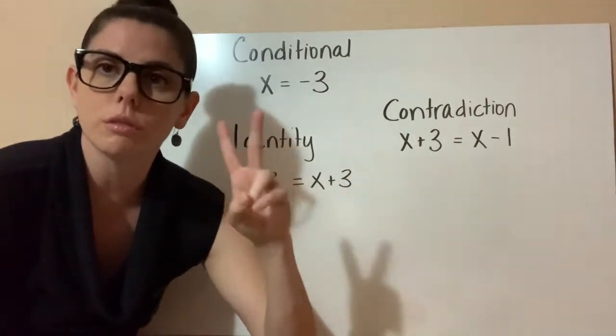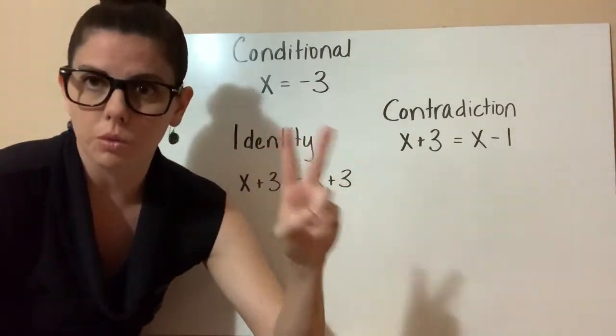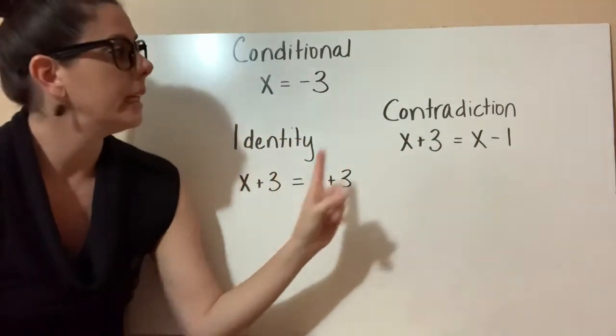But there's two other types of equations that could arise. You have identity and contradiction.